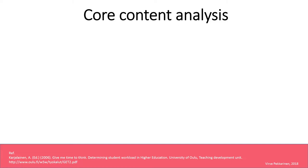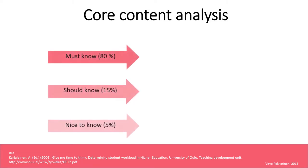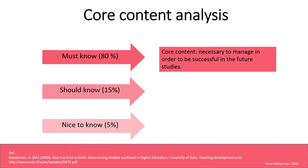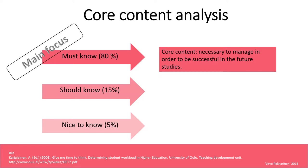There are different categorizations and classifications to be used in core content analysis. Perhaps the most used one divides the content into three categories, so that approximately 80% of the course content is the core content. The 'must know' content means the content that is necessary to manage in order to be successful in future studies. Understanding this content allows deep and broad knowledge acquisition — this is the main focus of the course and intended learning outcomes should be drawn from this content.